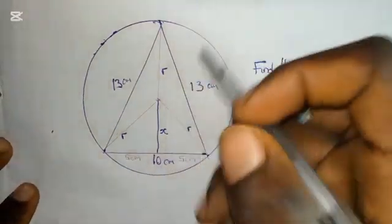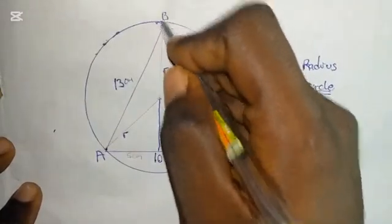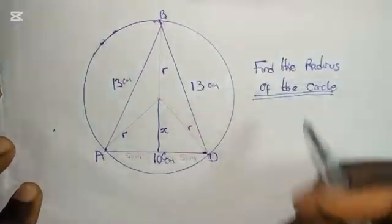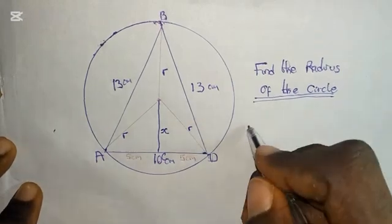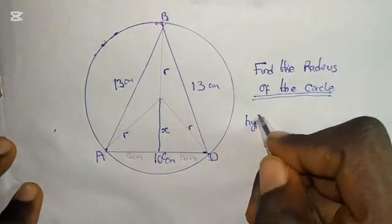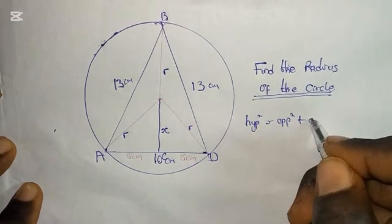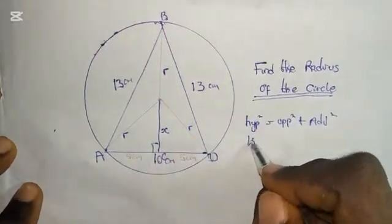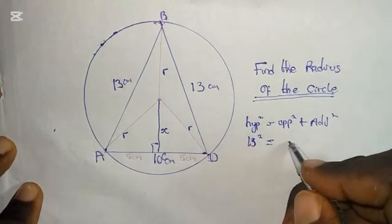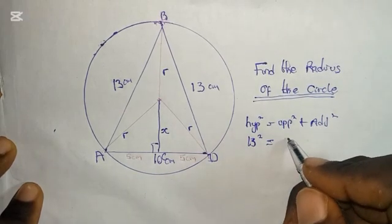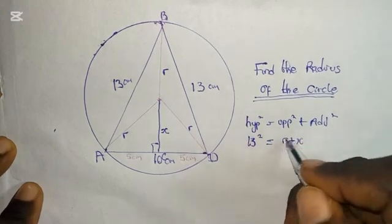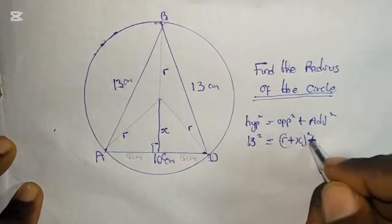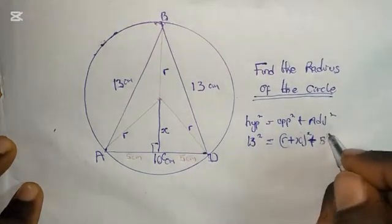Now let's label this as A, B, C, D. So let's look for BC using Pythagoras rule. And we know that Pythagoras rule says hypotenuse squared is equal to opposite squared plus adjacent squared. We have 13² = (R+X)² + 5².